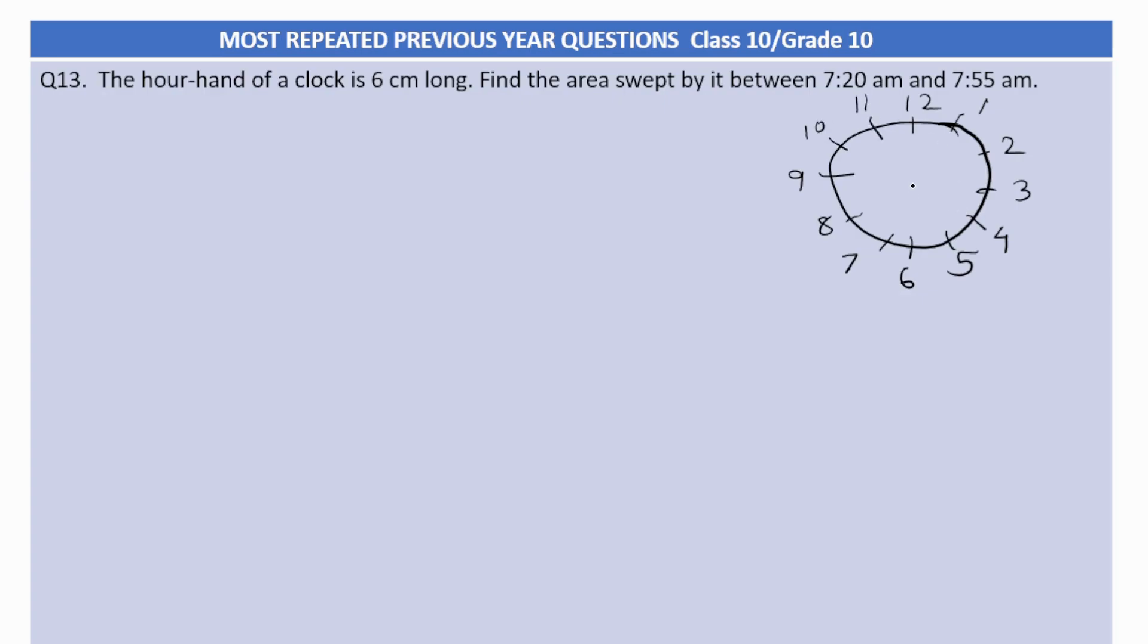Now suppose the hour hand will be somewhere between, a little less than 8, when it is 7:20. So hour hand will be somewhere here and minute hand will be pointing to 4 because it would be 7:20. Now after 35 minutes the hour hand will be pointing close to 8, and the minute hand will be pointing here to 11 to make it 7:55.